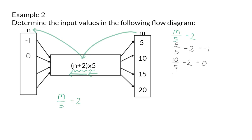Next I'm going to take 15 and divide that by 5 to get a value of 3, and then subtract 2 to end with an input value of 1. And lastly I'm going to take 20 and divide that by 5 to get a value of 4, and then subtract 2 to get my last input value of 2.